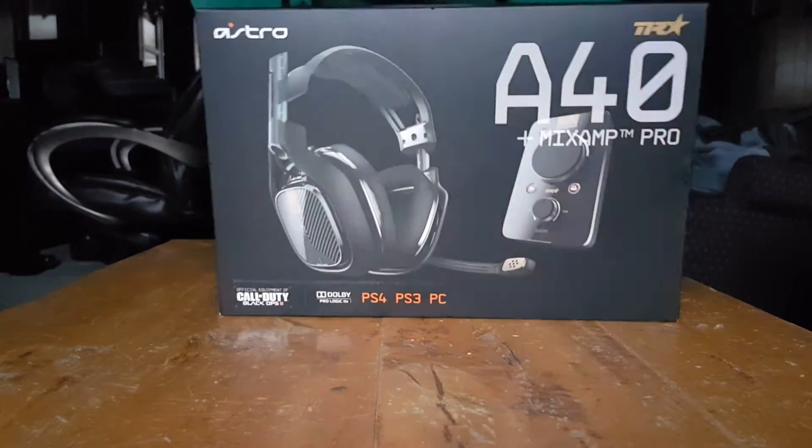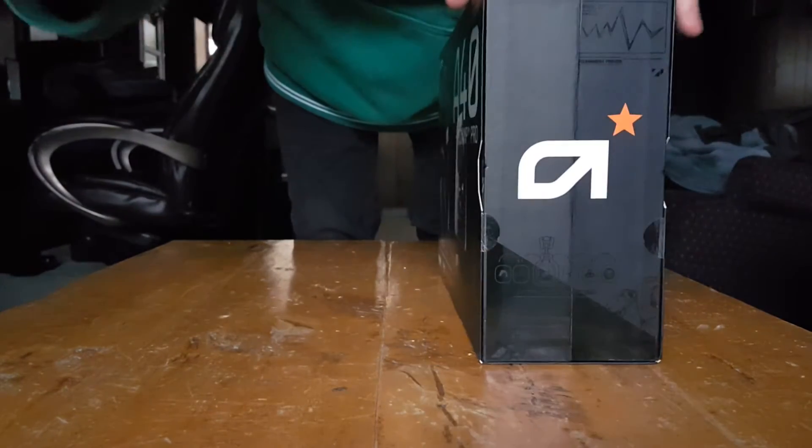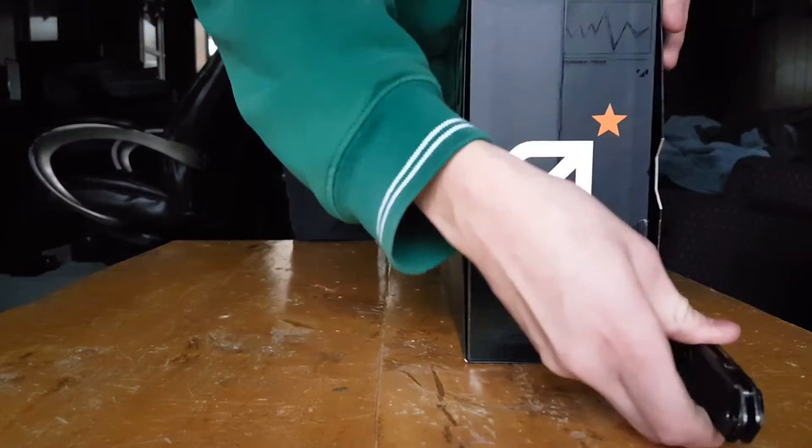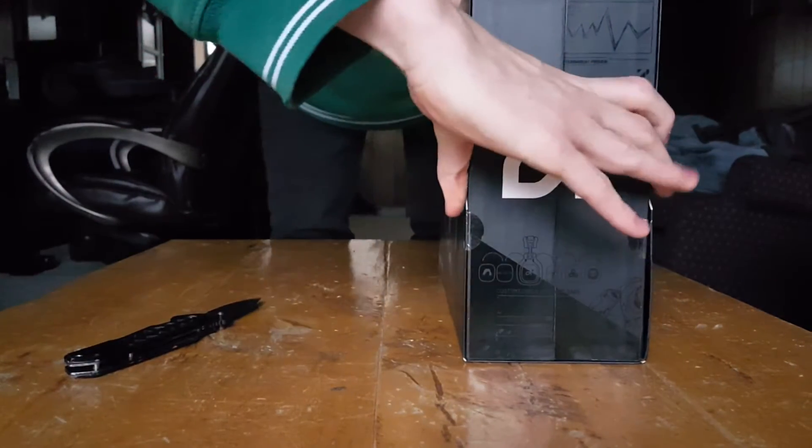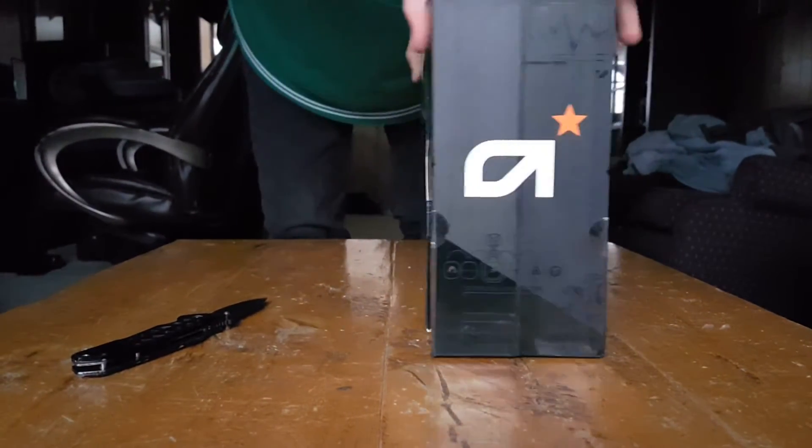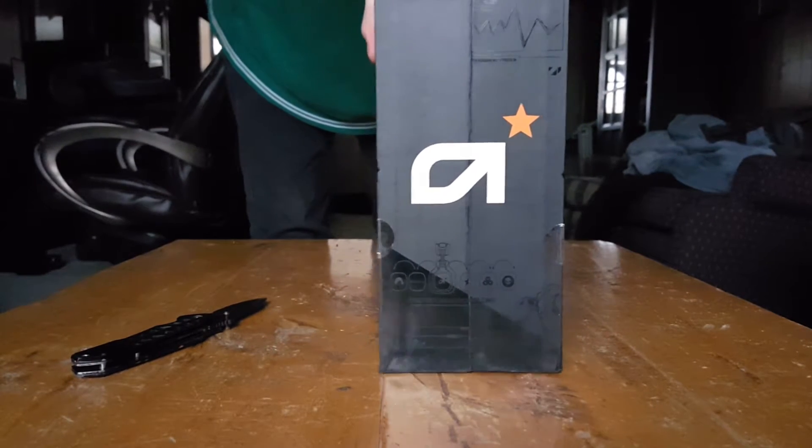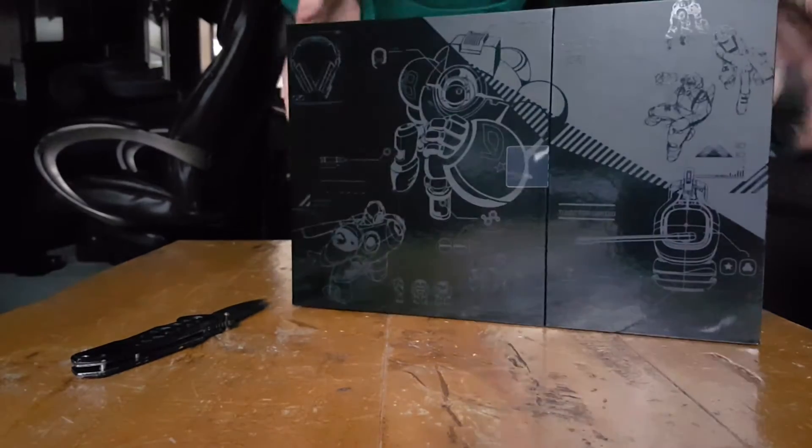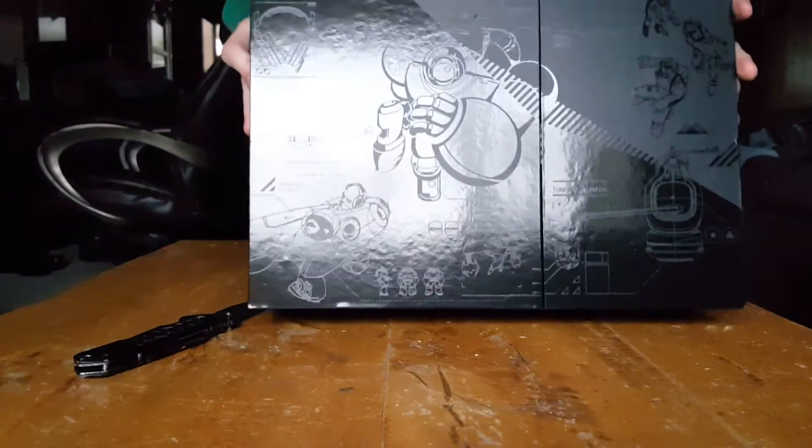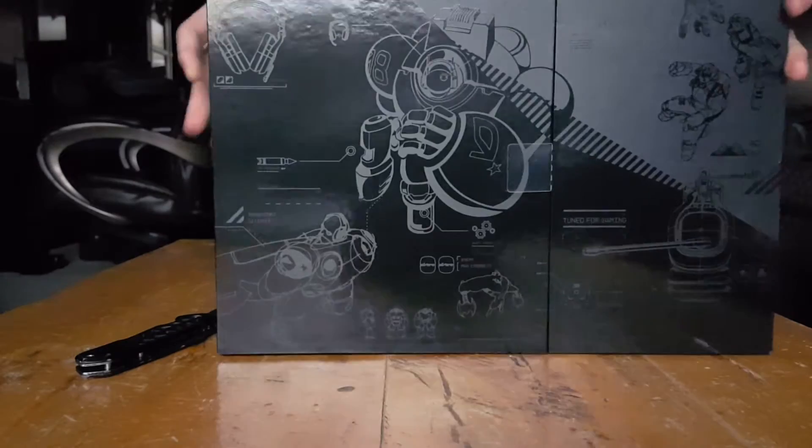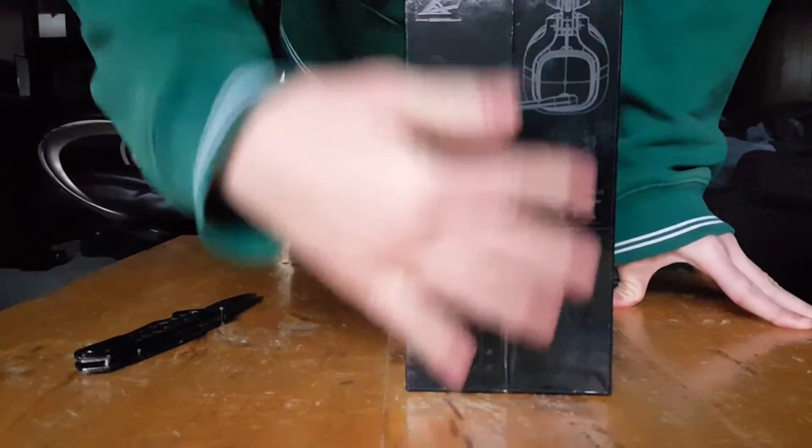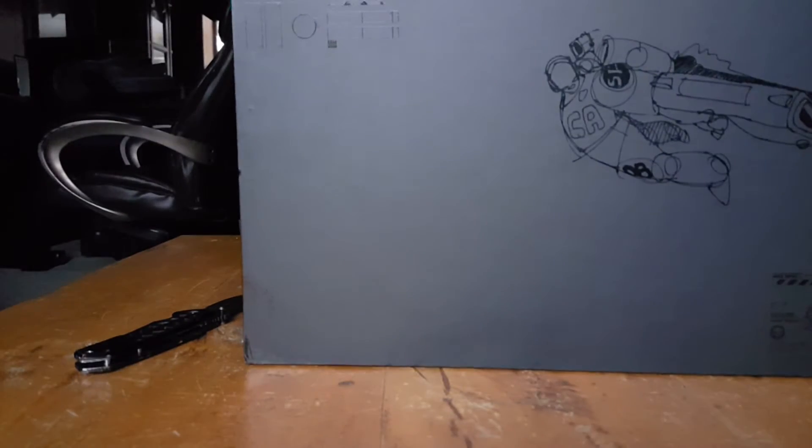I love all of Astro's packaging, it always looks amazing. You want to cut these tabs right here and then it slides out like an outer sleeve. You can toss that outer sleeve to the side and basically you have this matte and glossy black packaging which is very cool, very sleek.